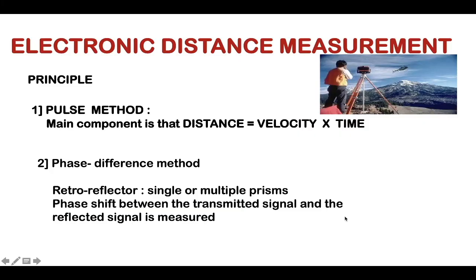Electronic distance measurement is based on the pulse method principle. The main component is that distance equals velocity times time. Next is phase difference method - many EDM instruments use this method with retro reflectors, which might be single or multiple prisms. Phase shift between the transmitted signal and the reflected signal is measured, from which time and distance are determined.